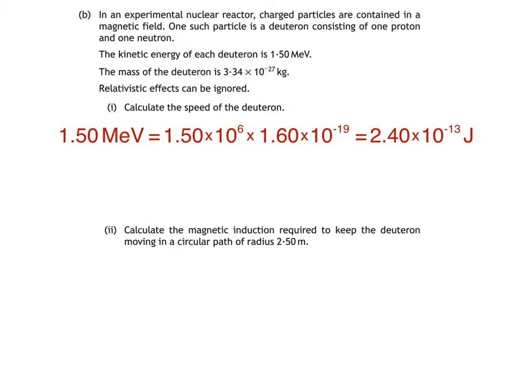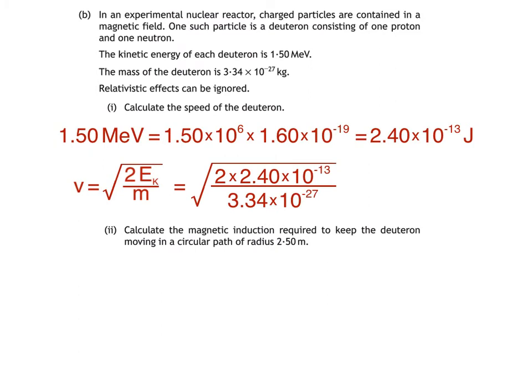Second of all, we use this equation to calculate speed v. We can substitute our values straight into the equation at this point, but I'm going to rearrange it first, just to show how it's done. Multiply both sides by 2. Divide by m. Then take the square root of both sides, giving us v equals the square root of 2 Ek over m. Substituting into this equation, we get the square root of 2 times 2.40 times 10 to the negative 13, divided by 3.34 times 10 to the negative 27, which is 1.20 times 10 to the power of 7 meters per second.